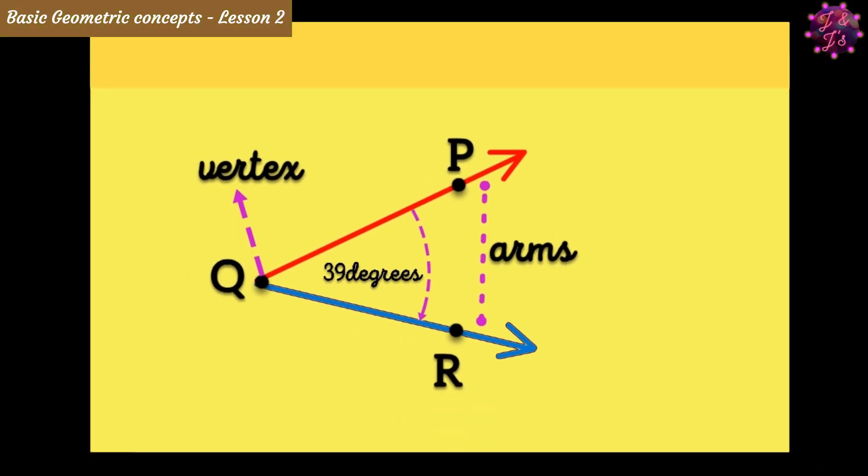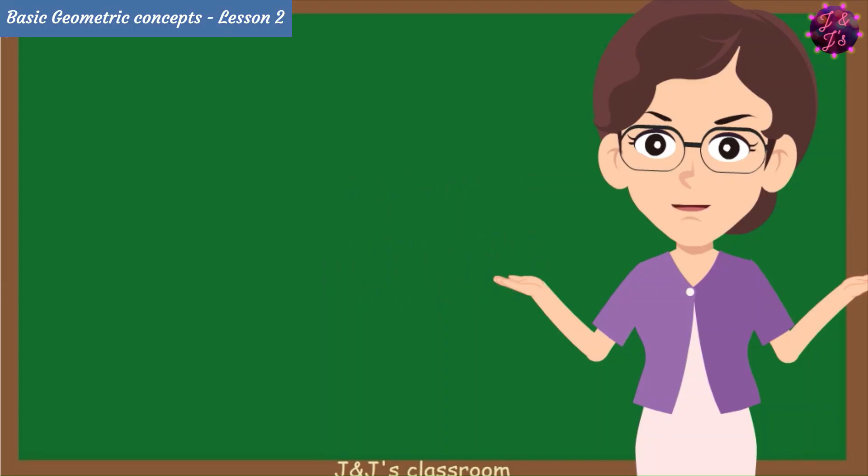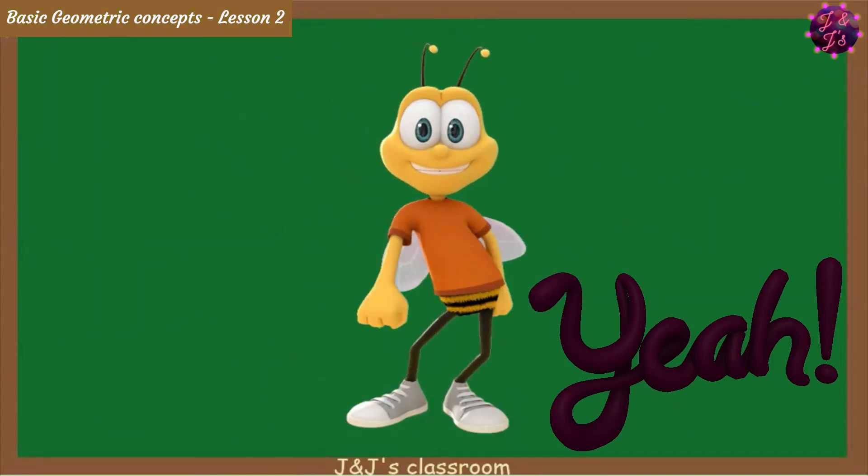This is called an angle of rays PQ and QR. So, the angle of PQR is 39 degrees. I hope you got practice to measure an angle using protractor. That's all about today's class. Yay!